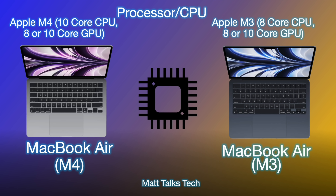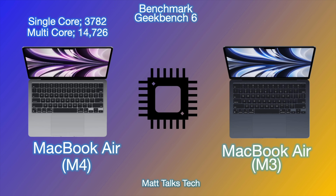For GPU core options, you have a choice of eight or ten cores. If you go for the 13.6-inch baseline M3 or M4 MacBook Air, you get an eight-core GPU. For $100 more you can upgrade to the 10-core option, and if you upgrade storage from 256GB to 512GB, you automatically get the 10-core GPU. If you pick the 15-inch MacBook Air — M3 or M4 — you always get the 10-core GPU by default, so you never have to worry about upgrading the chipset.